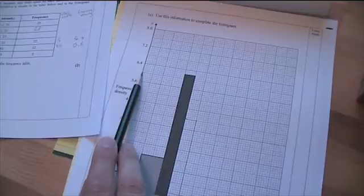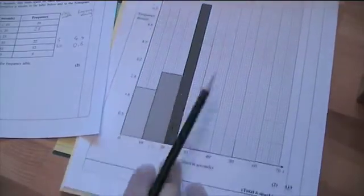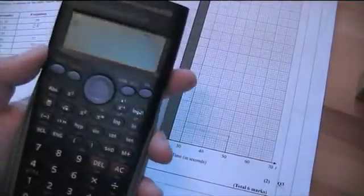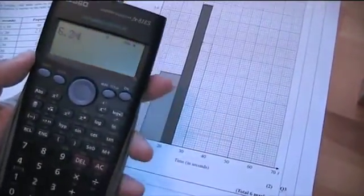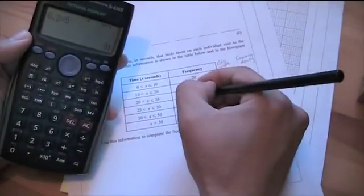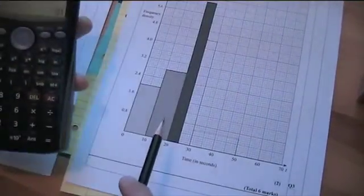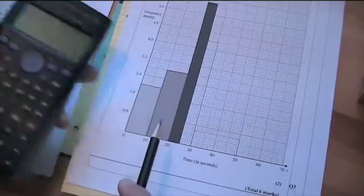We're looking at 5 wide. So, the frequency is 31. I've just done 6.2 times by 5 to work out the area. Okay, so then we're done.